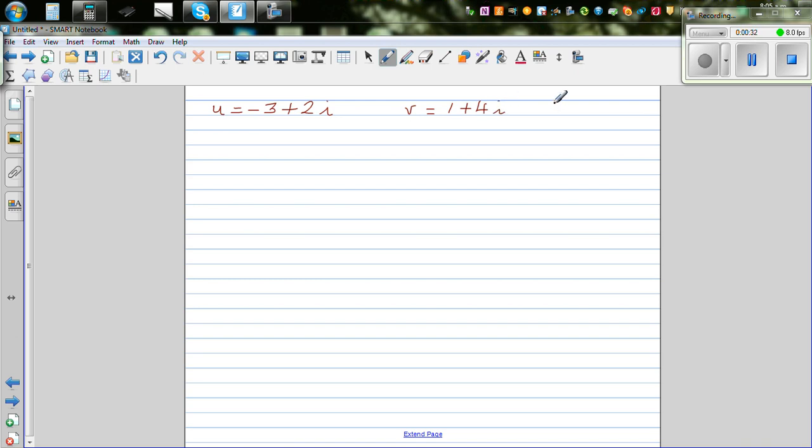Now we want to write this in different forms. First, let's find 2u minus v. This is manipulation of complex numbers. So this would be 2 times u, which is 2 times minus 3 plus 2i, minus v, which is 1 plus 4i. Expanding this, 2 times minus 3 is minus 6 plus 4i. Opening this bracket gives minus 1 minus 4i.